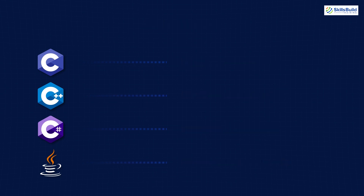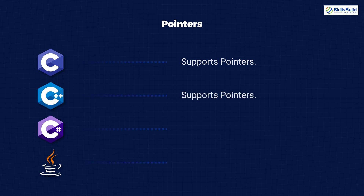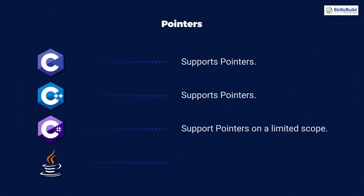In terms of pointers: C supports pointers and C++ also supports pointers. C# supports pointers but only in a limited scope — a C# pointer is a variable that holds the memory address of another type, but it can only be declared to hold the memory address of value types and arrays.